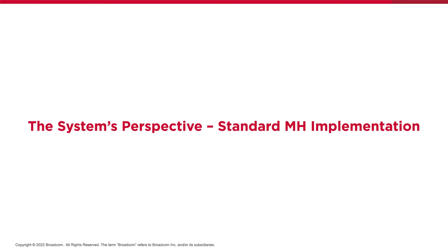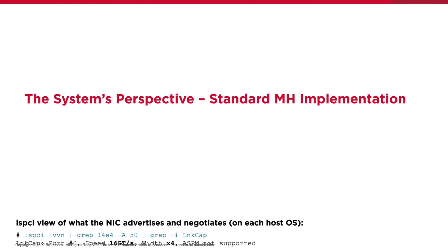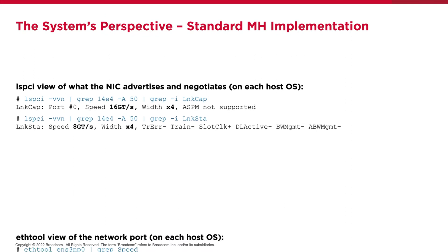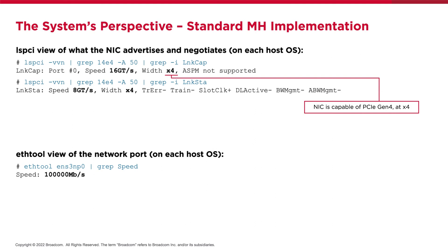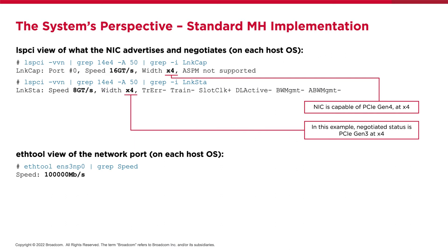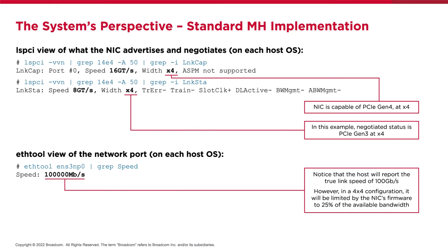You may be curious what this all looks like from the system's perspective. Here we show what it looks like via LSPCI and ETH tool on a given host — this would be the perspective from each of the four hosts in their respective OS installs. The LSPCI output for PCIe link capability shows a Thor-based NIC advertising that it's capable of up to PCIe Gen 4 by 4 lanes, and the link status in this example is Gen 3 by 4, which is sufficient for 25 gig allocation. With this multi-host design, ETH tool will show the true port speed of 100 gig, even though the host will not be able to achieve the full 100 gig bandwidth on its own.